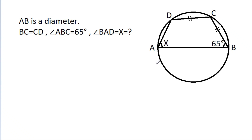In this video, we have given a circle where AB is a diameter, BC is equal to CD, and angle ABC is 65 degrees. Angle BAD is X, and we have to find X.